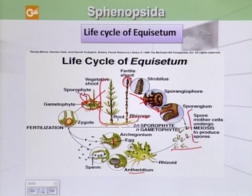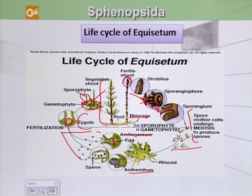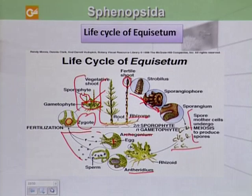Inside the sporangium, spore mother cells undergo meiosis and produce various spores. These spores develop to form antheridia and archegonia. After fusion of eggs and sperms, a zygote is produced which then forms the plant body. So this is all about the life cycle of Equisetum.